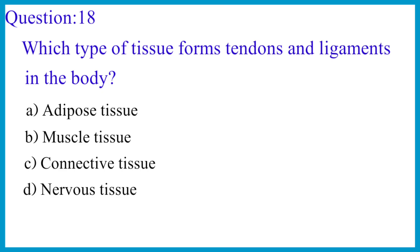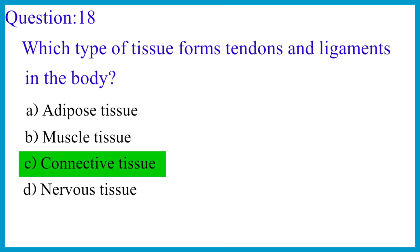Question number 18. Which type of tissue forms tendons and ligaments in the body? The correct answer is option C: Connective tissue.